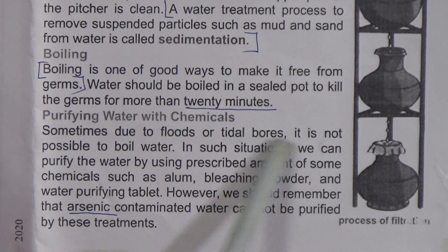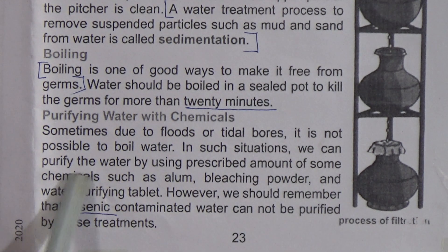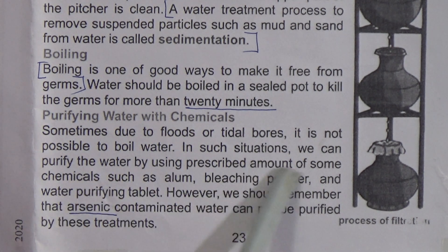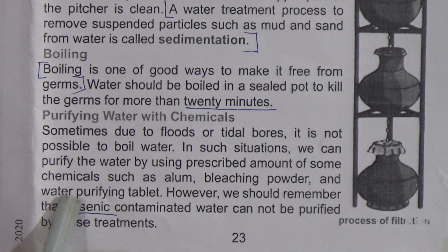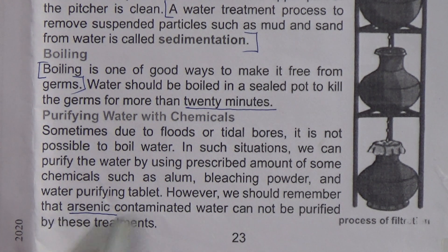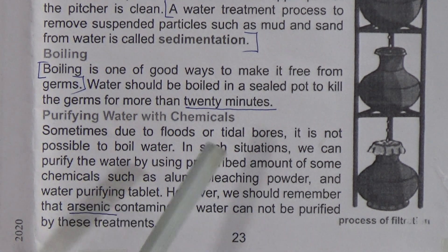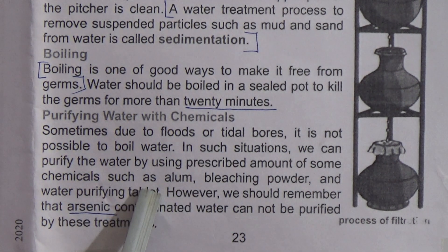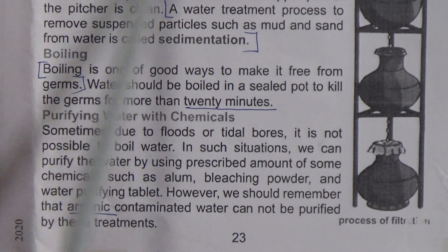Sometimes, due to flood or tidal bores, it is not possible to boil water. In such situations, we can purify water by using a small amount of some chemicals such as alum, bleaching powder, and water purifying tablets. However, we should remember that arsenic-contaminated water cannot be purified by these treatments. The water purifying chemicals are alum, bleaching powder, and water purifying tablets.